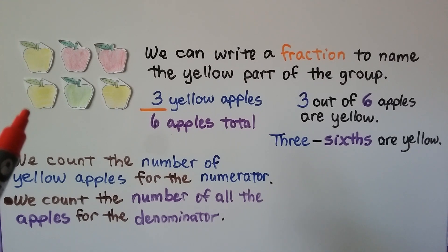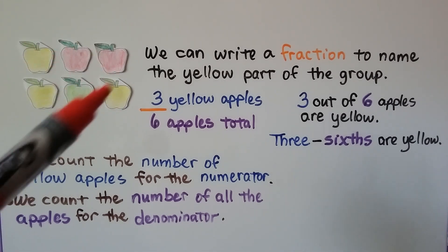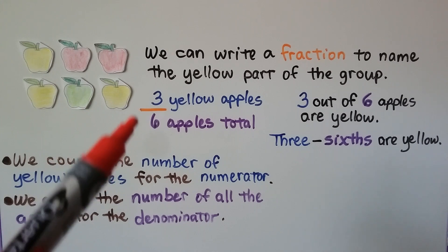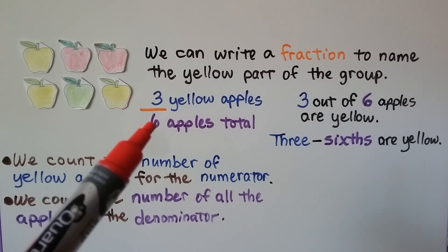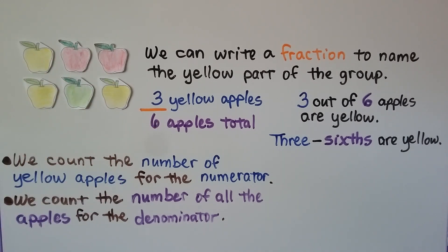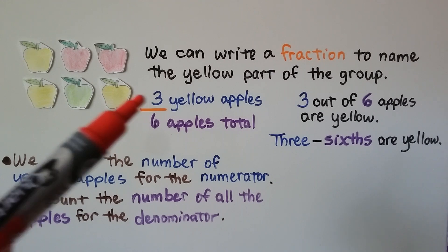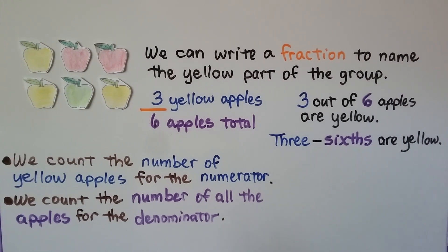Here we have six apples. We can write a fraction to name the yellow part of the group. We have three yellow apples and six apples in all. Our numerator is three for the three yellow apples, and our denominator is six for the total apples. Three out of six apples are yellow — three sixths are yellow. We count the number of yellow apples for the numerator and all the apples for the denominator.